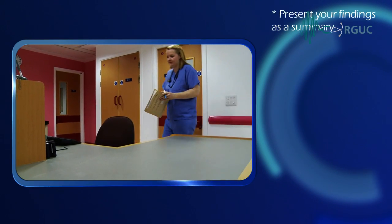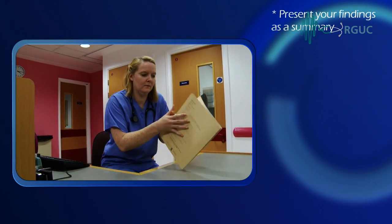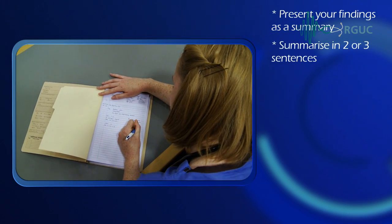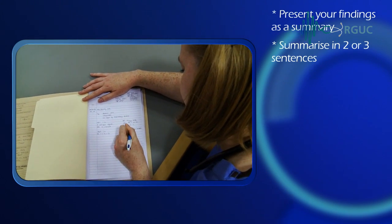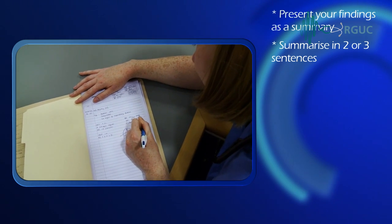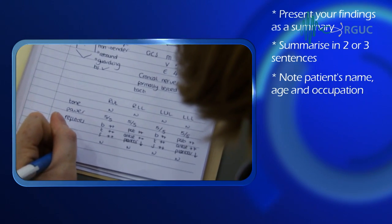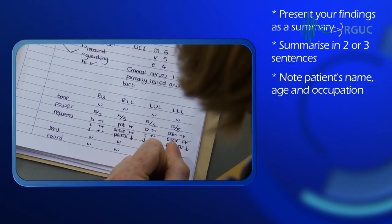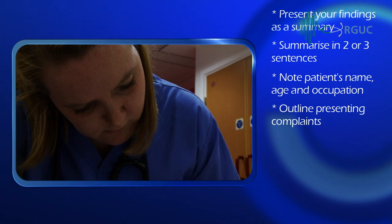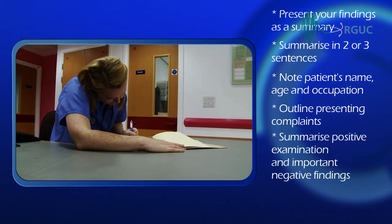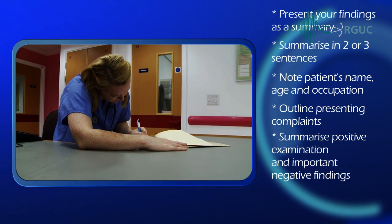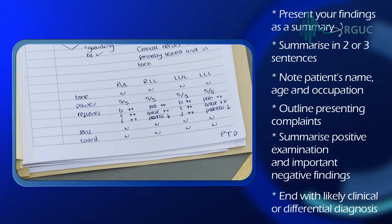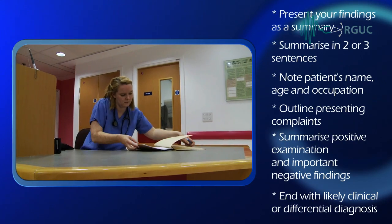After completing your examination, you will often be required to present your findings in the form of a summary. When presenting, summarise the key points succinctly into two or three sentences. A common framework includes starting with the patient's name, age, and occupation, followed by a brief history of presenting complaint, positive examination findings and important negatives. If appropriate, end the summary with the most likely clinical diagnosis or differential diagnosis, and any investigations and management already in place.